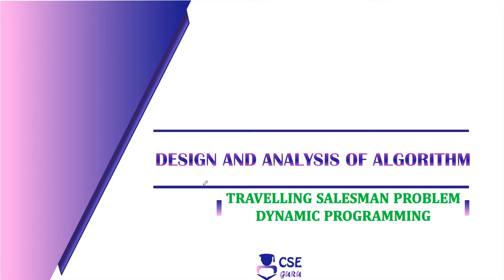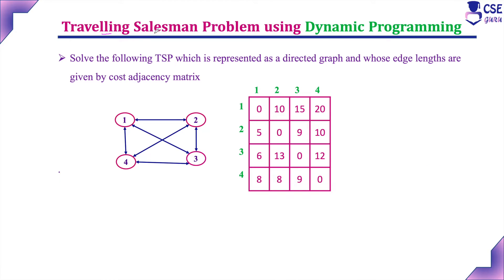In this session, we will discuss the traveling salesman problem using a dynamic programming approach as a simple method. The salesman has to start from one city, considered as the source city or starting city or vertex. From that city, he has to visit all other cities exactly once and come back to the starting city. We are going to implement TSP using dynamic programming with a state-space tree.